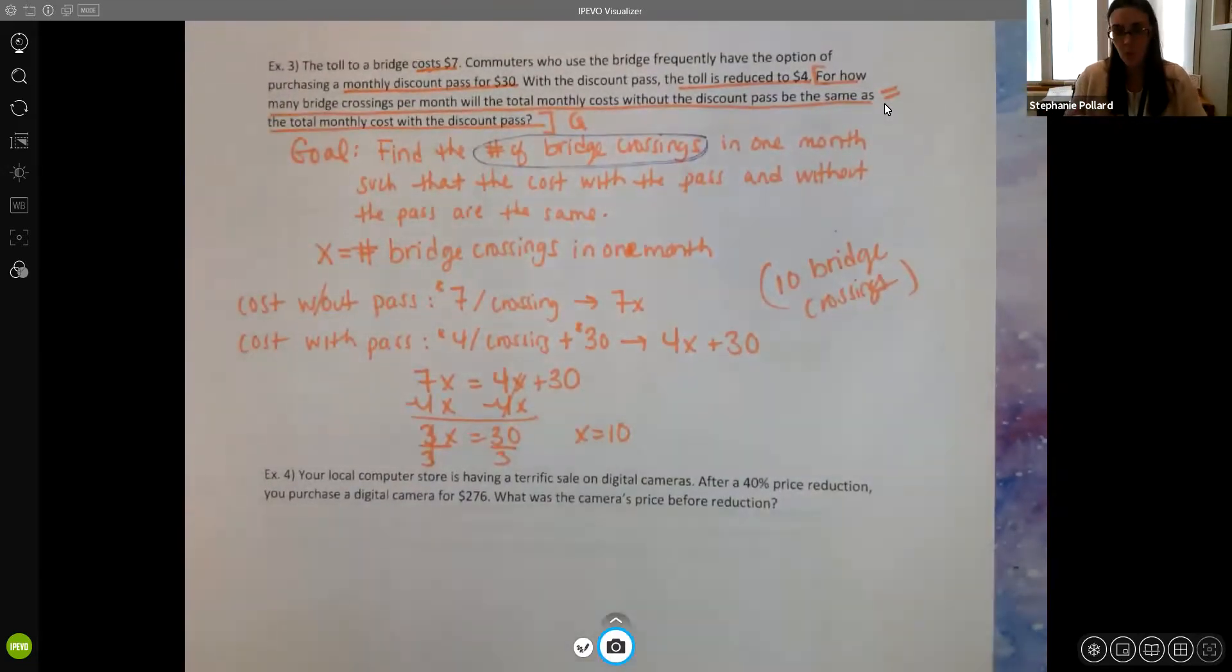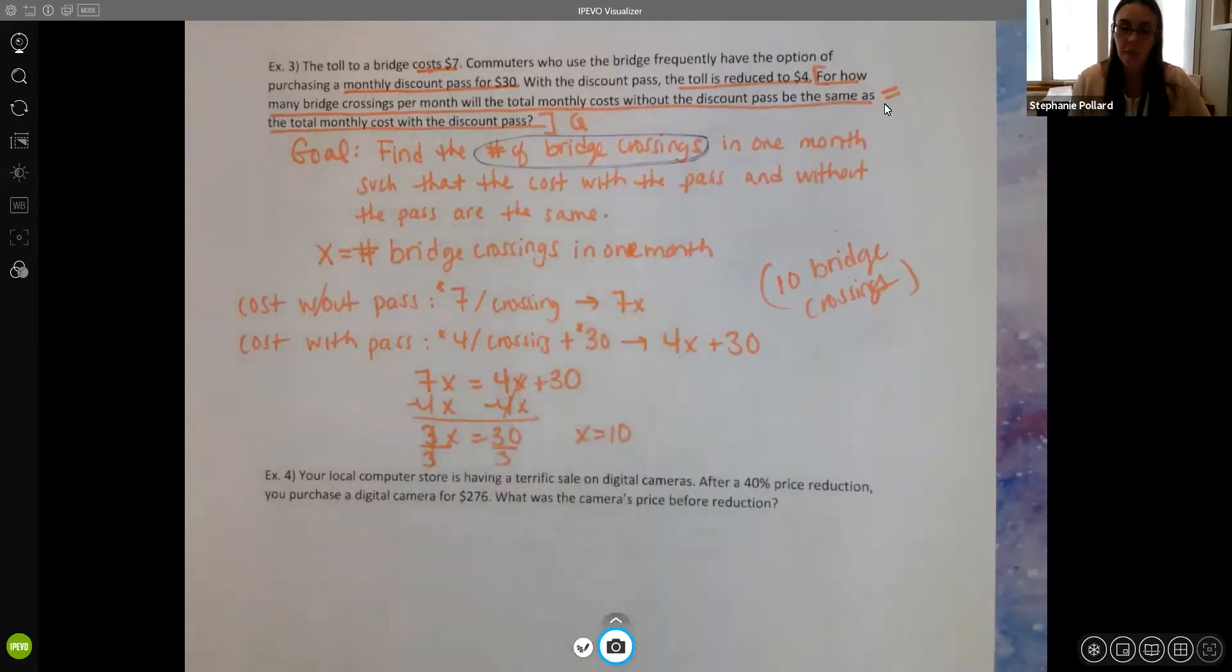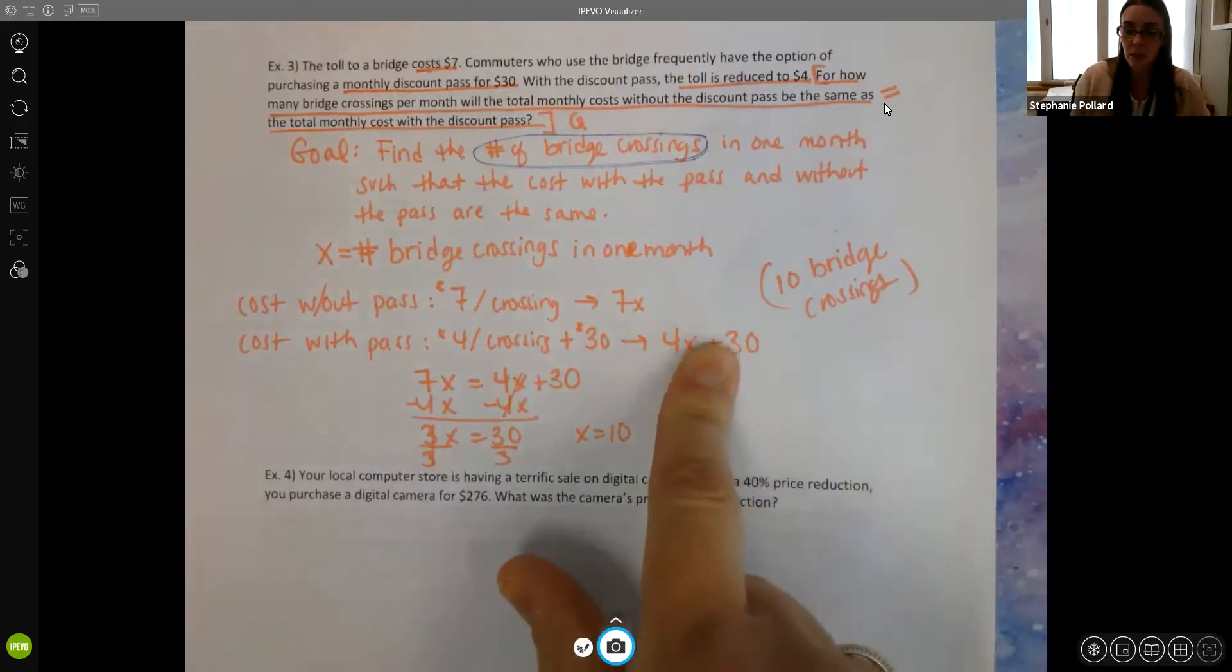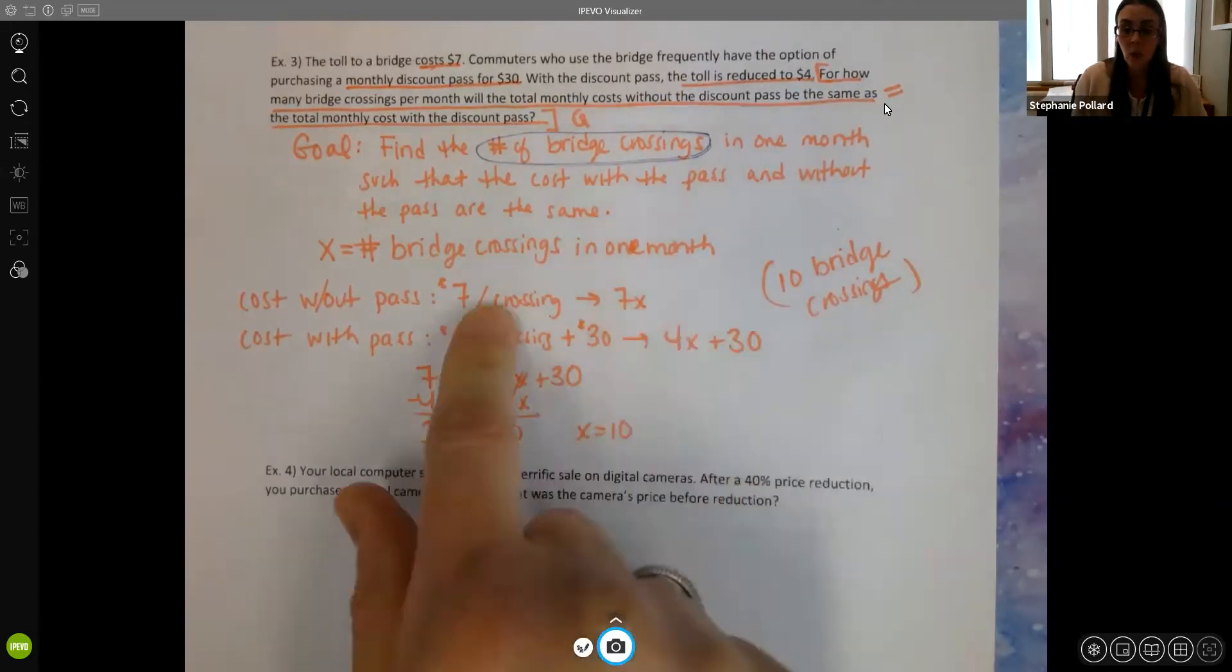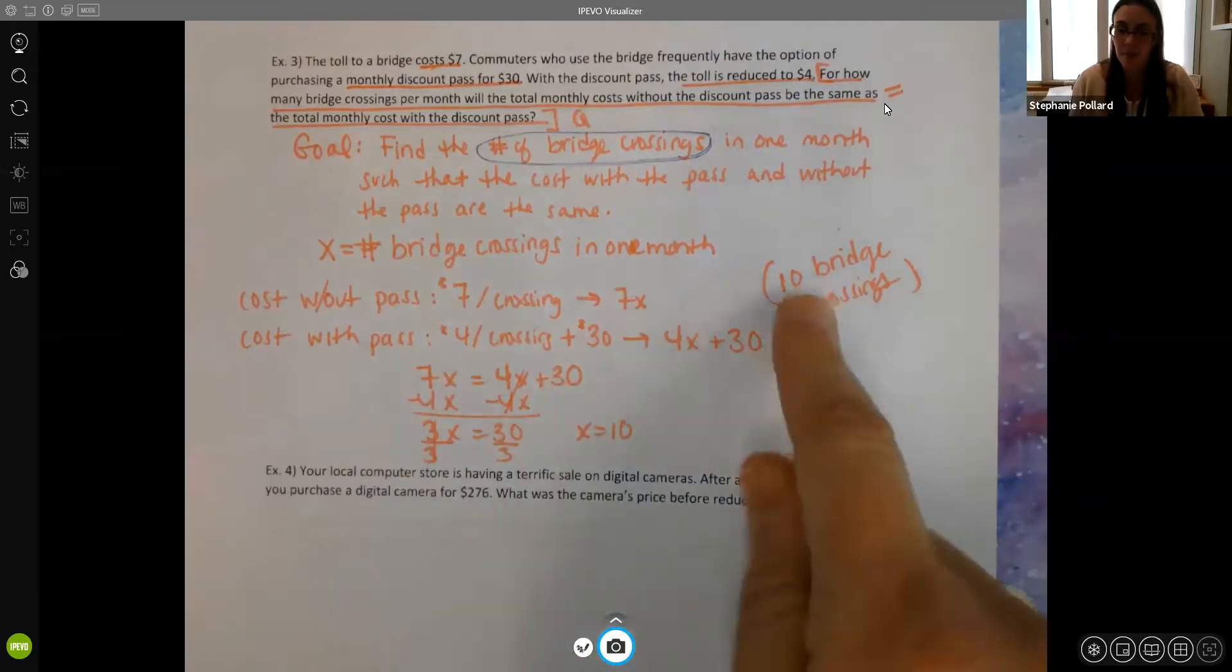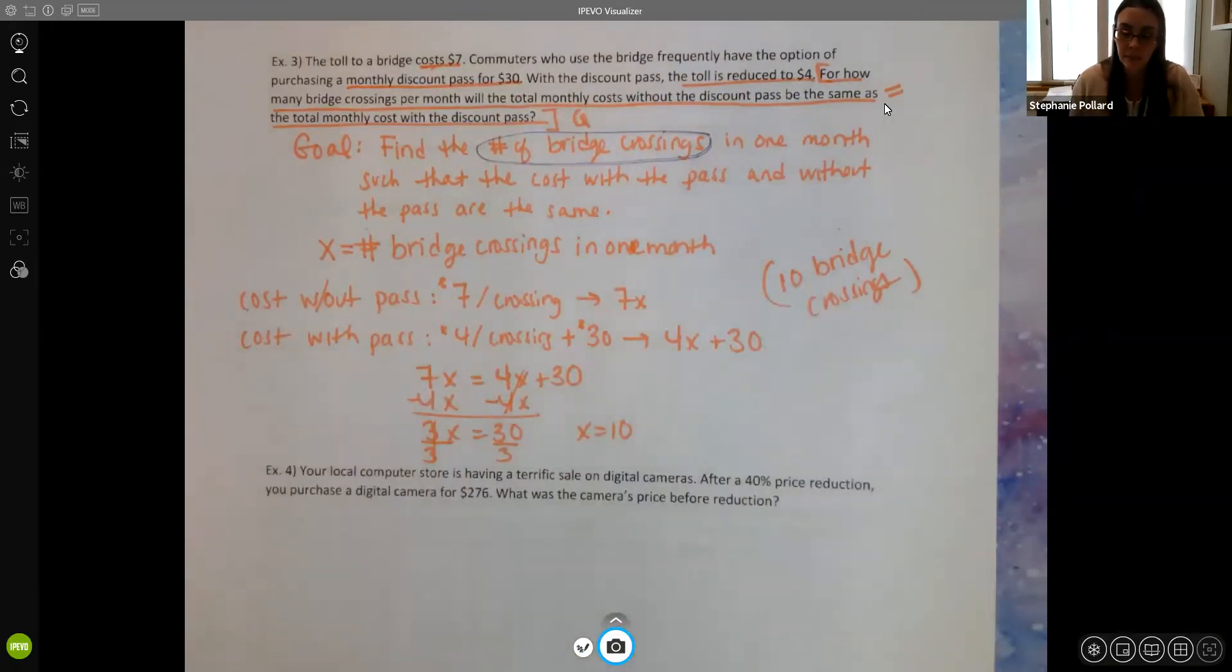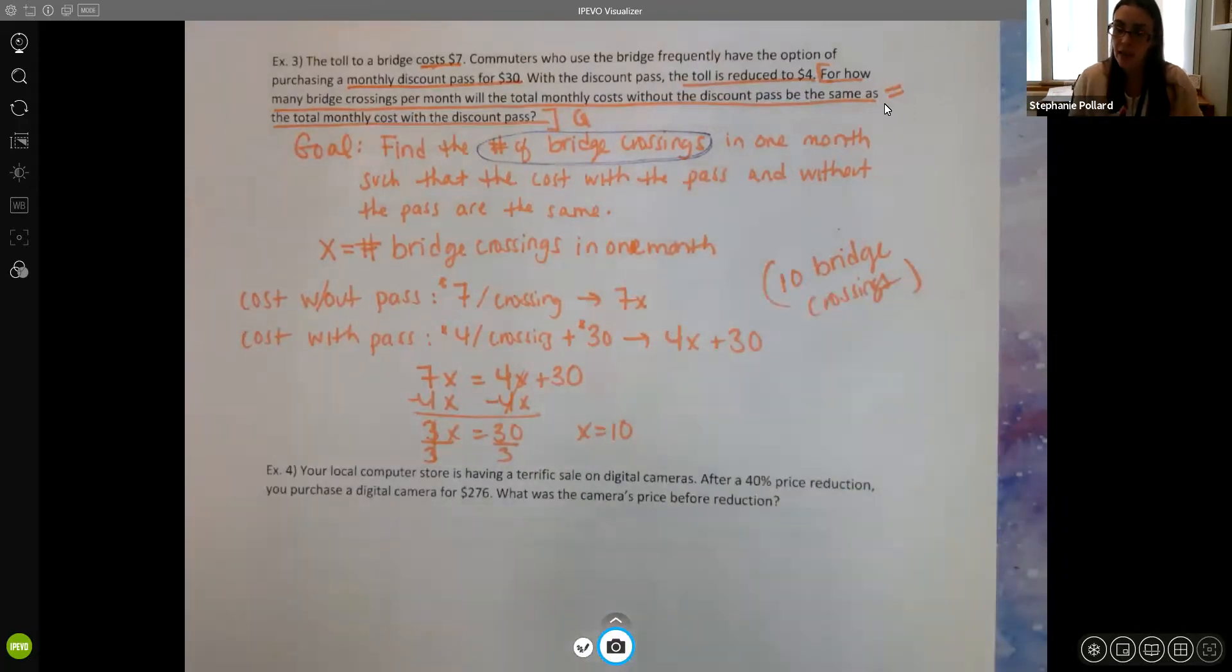So if you are going to travel more than 10, then getting that discount pass would likely be worth it, because if you're traveling across the bridge 10 times, then it doesn't matter if you get the pass or not. It's going to be the same exact cost. But if you travel more than that, and you can do this by testing, if I try to plug in like 11 here to see what I get, or 12 or 20, if you travel more than that, then your pass is going to be worth it. So if you're someone who has to travel over the bridge twice a day every day, then that discount pass is worth it. If you only go to the bridge occasionally, you know, less than 10 times a month, then it's not going to be worth you getting the pass. So 10 is the amount where they're exactly the same, and more or less than 10 would affect your decision on whether or not to get that pass.